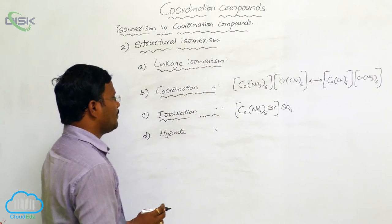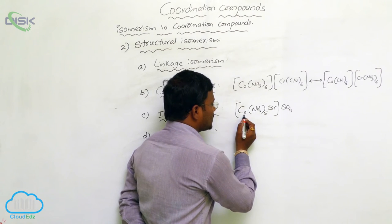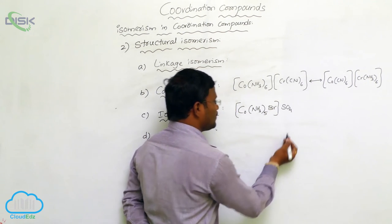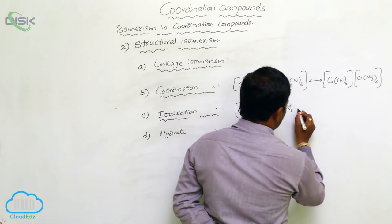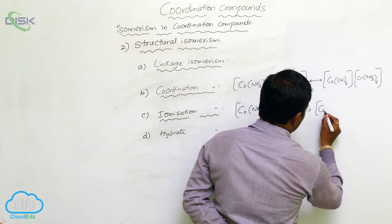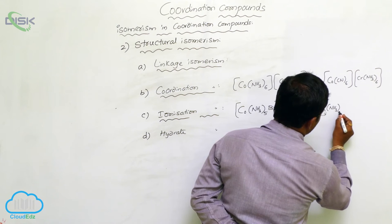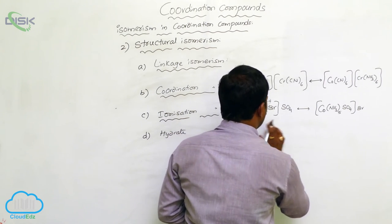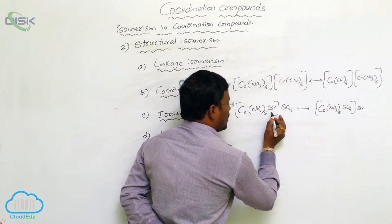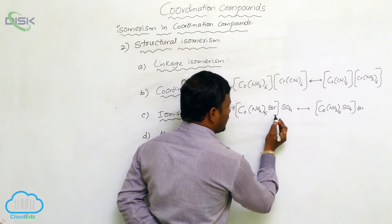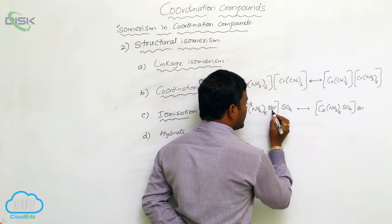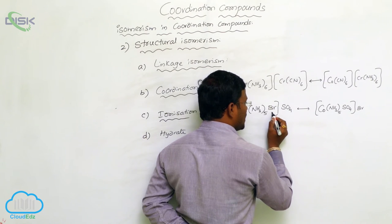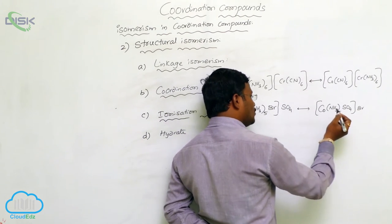For example, consider a cobalt complex with 5 ammonia molecules and 1 bromine inside the coordination sphere, with sulfate outside satisfying primary valence. In the isomer, bromine — due to its high potency — interchanges with sulfate, so sulfate enters inside the coordination sphere and bromine moves outside. The resulting isomers are called ionization isomers.